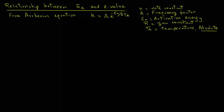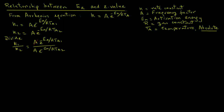First, we can determine this rate constant at two different temperatures. We can write k1 equals A times e raised to power minus Ea over RTa1, and k2 equals A times e raised to power minus Ea over RTa2. Next, if we divide these two equations, on the left-hand side we have k1 over k2, and the A values will cancel out on the right-hand side, giving k1 over k2 equals e raised to power minus Ea over RTa1, divided by e raised to power minus Ea over RTa2.